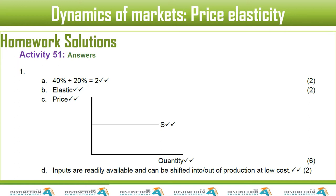This would be something like maize. So here's our answer for number one: two, elastic. The price labeling of this axis should have been closer to the axis, but this is the quantity axis, labeled correctly. Then this is the S, which is very vital, because if it's not S, then it's D and your answer becomes wrong. Make sure it's fully labeled — that's why we have six marks for the axes and for the supply curve.